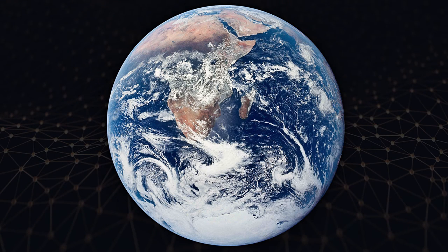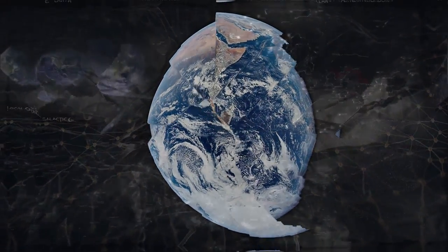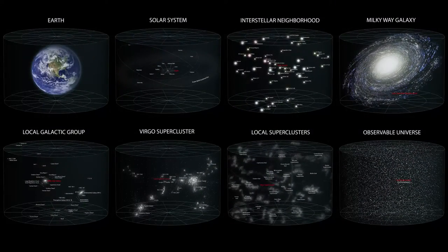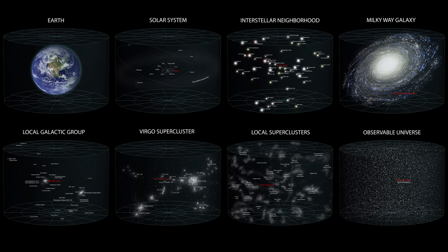And now we have the neural fabric of the universe. First, of the Earth and its relationship with the solar system's relationship with the interstellar neighborhood and the Milky Way galaxy, and the local galactic group and the Virgo supercluster, and the local supercluster and the observable universe and beyond.